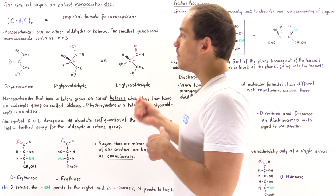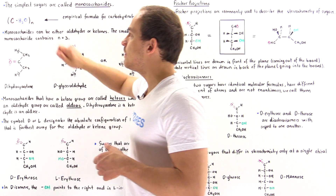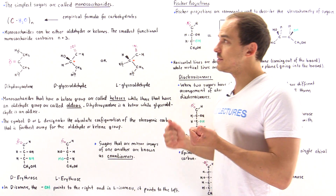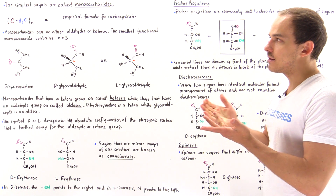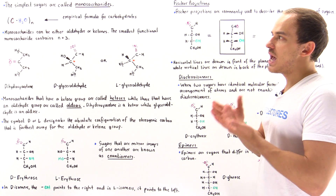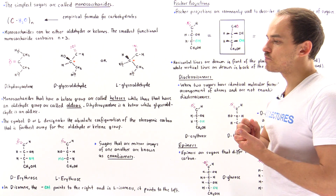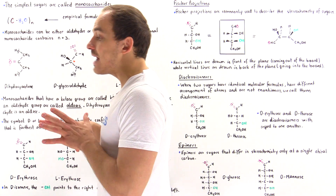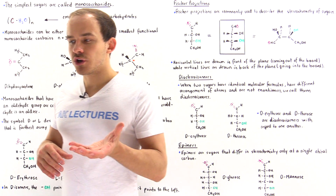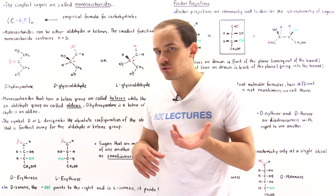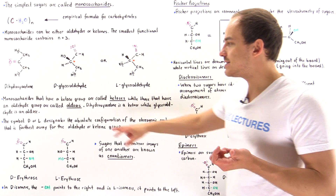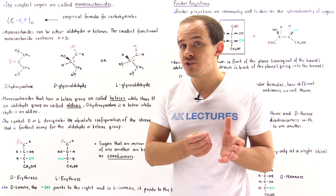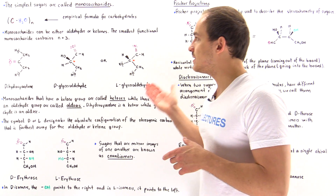The simplest monosaccharide contains an N value equal to 3, meaning it consists of 3 carbon atoms, 6 H atoms, and 3 oxygen atoms. Generally speaking, there are two categories of sugars: those containing aldehyde groups, known as aldoses, and those containing a ketone group, known as ketoses.